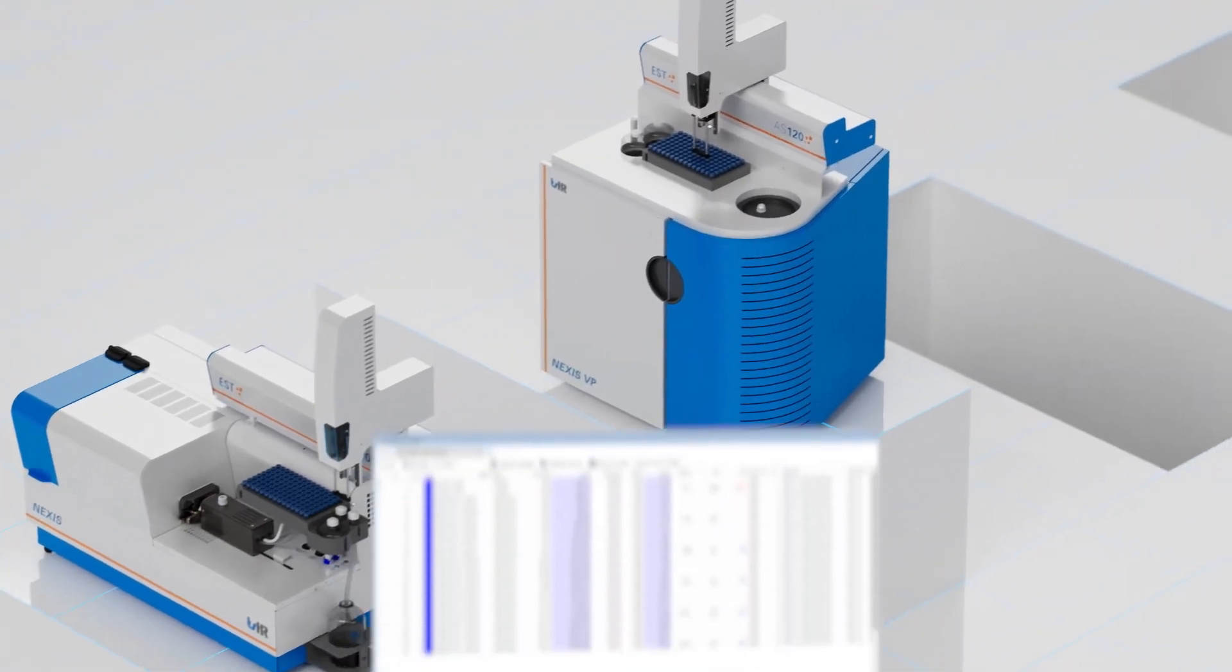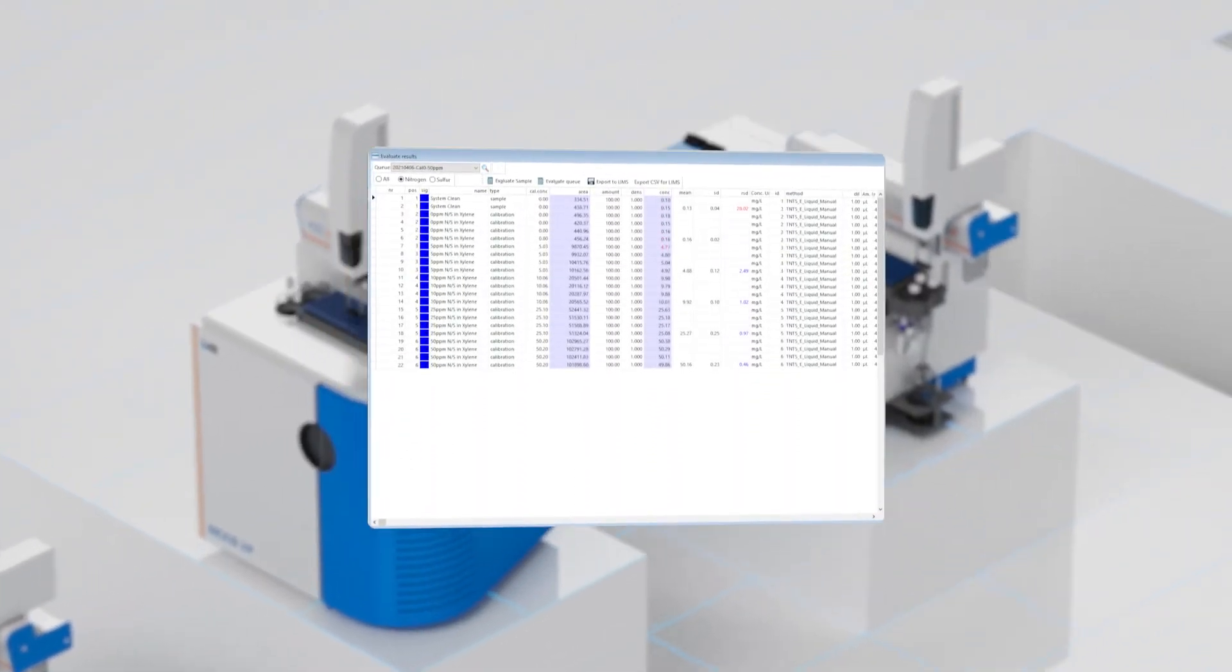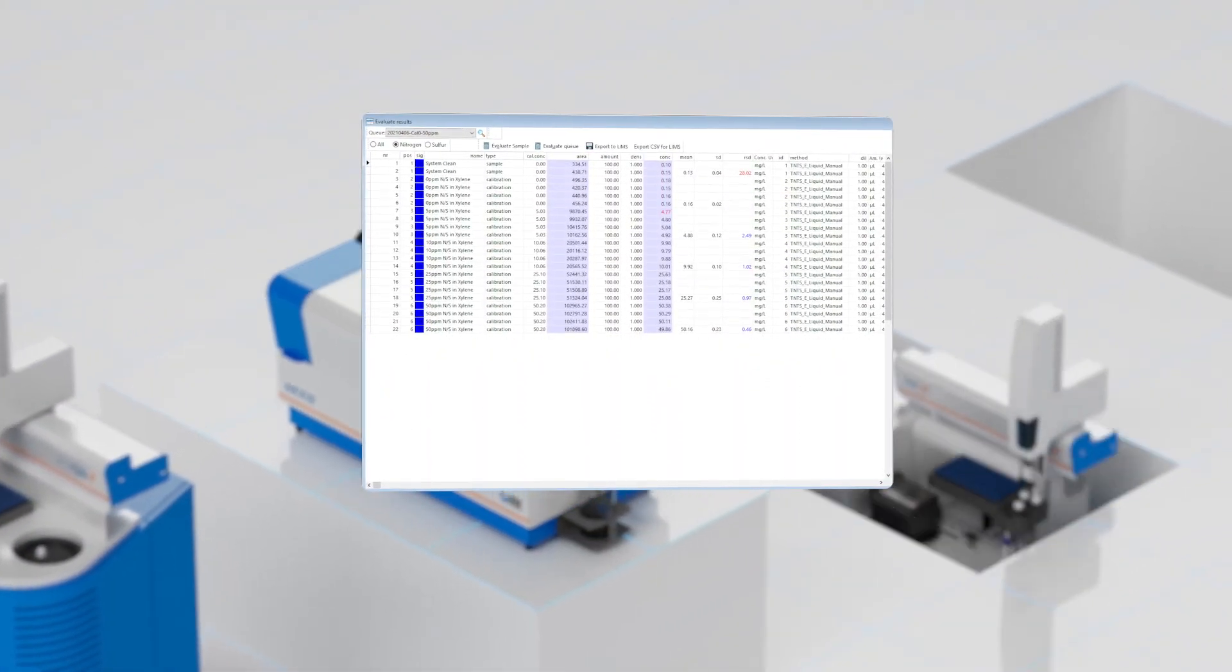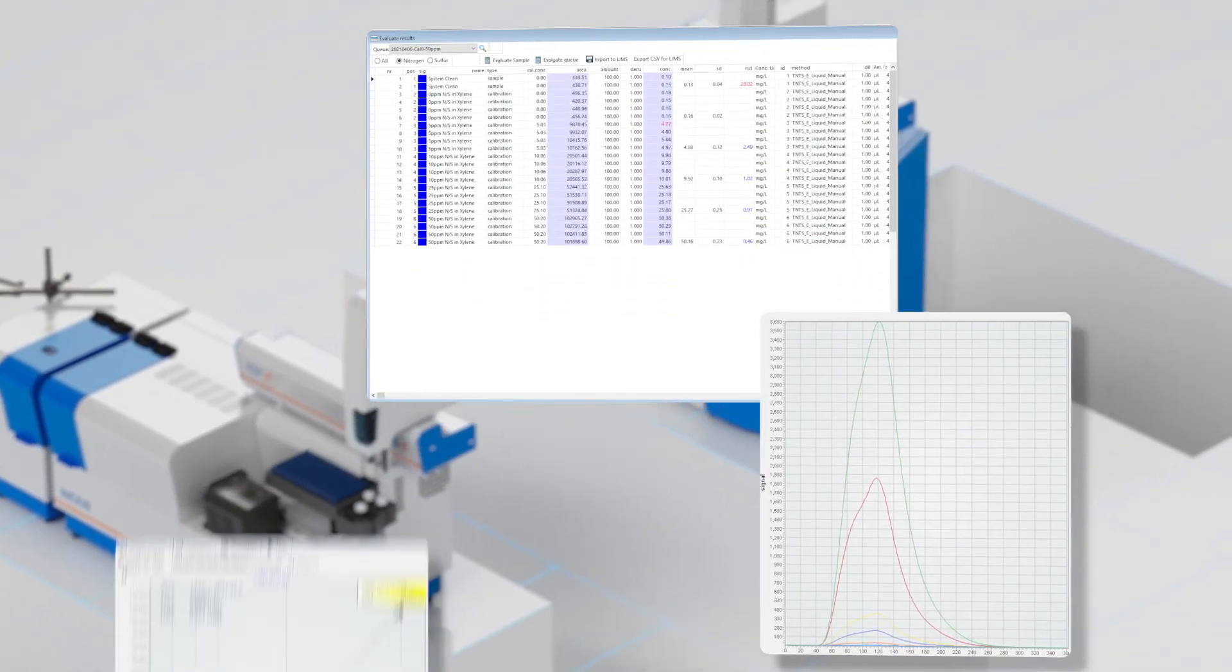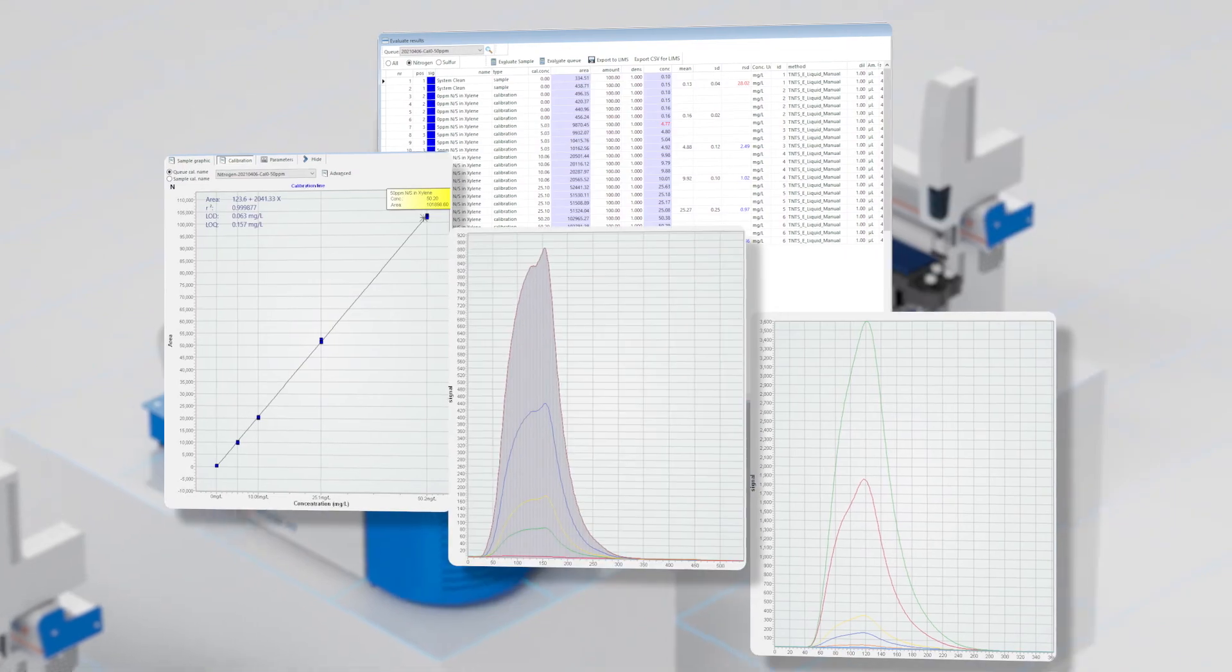In every configuration, the intuitively designed and easy-to-use Nexus Link software supports the operation and data handling of the Nexus. This includes the ability to edit predefined methods, adjust calibration curves, and view real-time peak integration.